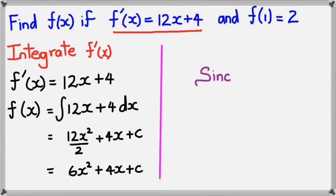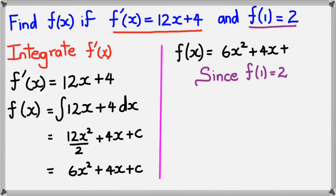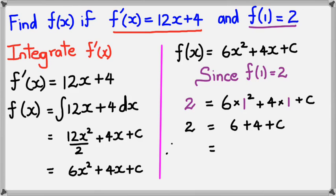Now, we know that f of 1 equals 2. And we also have our function itself, which is 6x squared plus 4x plus c. So what we can do is substitute f of 1 into the equation where the y value is 2 and try and figure out what c is. So we have 2 equals 6 times 1 squared plus 4 times 1 plus c. And what we should get is c is equal to negative 8.